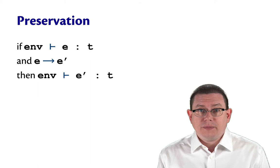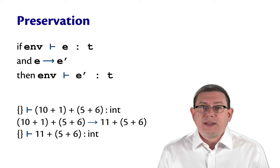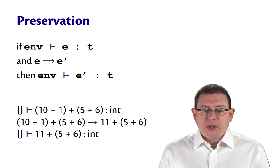Here's an example of that. Suppose you had the complicated expression 10 plus 1 plus 5 plus 6. Well, we know that that takes a single step, reduces the 10 plus 1 to an 11. And indeed, 11 plus 5 plus 6 continues to have type int.